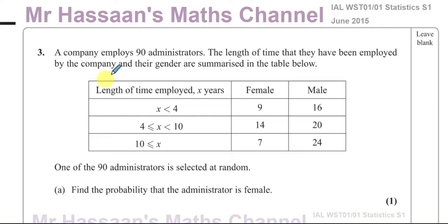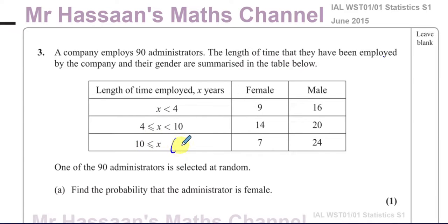It says a company employs 90 administrators. The length of time that they have been employed by the company and their gender are summarized in the table below. The length of time employed in years: X is less than 4, X is between 4 and 10, and X is greater than or equal to 10 — that last part means X is greater than or equal to 10.